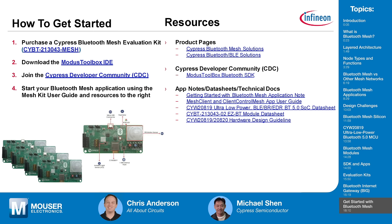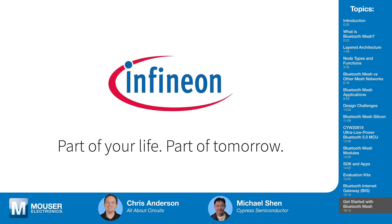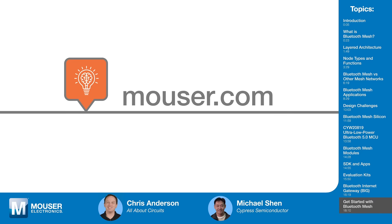To get started with Bluetooth mesh, you can purchase the Cypress Bluetooth mesh evaluation kit from Cypress or Mouser. The ModusToolbox SDK can be downloaded from the Cypress website. Cypress also has a community forum where application engineers are available to answer your questions. To learn more about Cypress's Bluetooth mesh solutions, click the links in the description or visit Mouser.com.